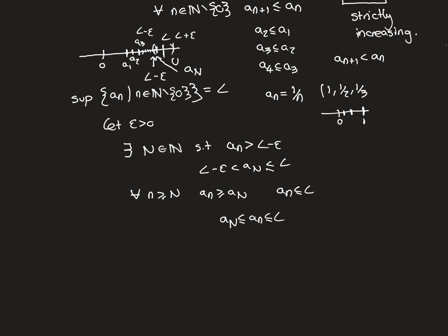It's a beautifully simple argument. Since it works for a general epsilon, it works for all epsilon. Hence the sequence gets and stays indefinitely close to L and therefore converges to it. That proves: if you have a bounded, monotonically increasing sequence, it converges to the supremum of all the terms of the sequence.